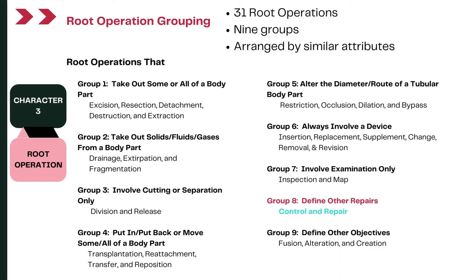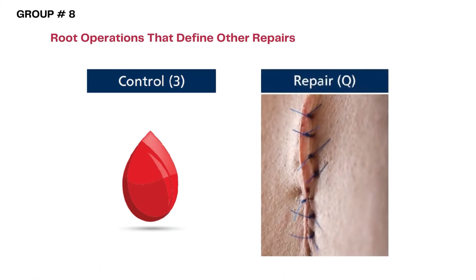Today we are looking at the 8th group which talks about root operations that define other repairs. There are only two root operations in this 8th group: control and repair. These two root operations are used when the objective of the procedure is to control bleeding by closing off the body part, either by cauterizations or by suturing the actual bleeding portion — basically controlling bleeding via the root operation control or the root operation repair.